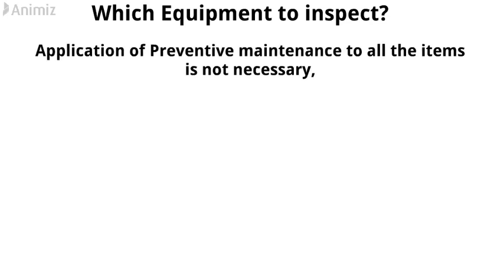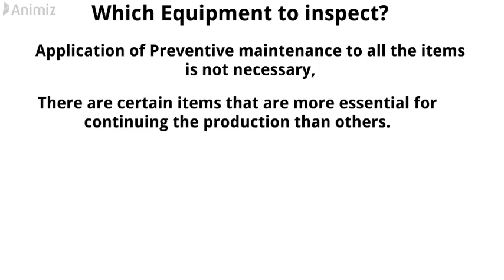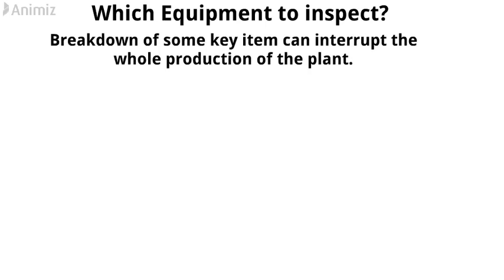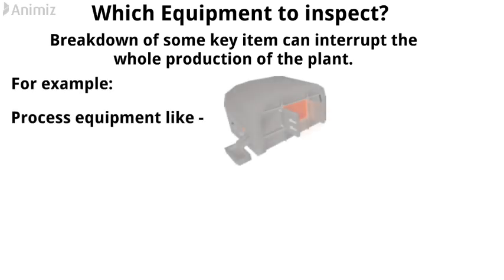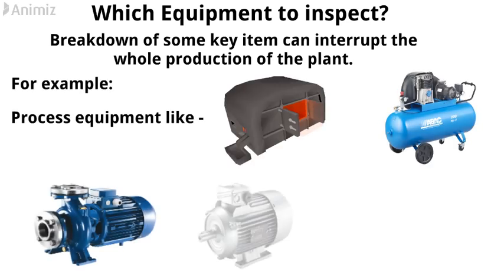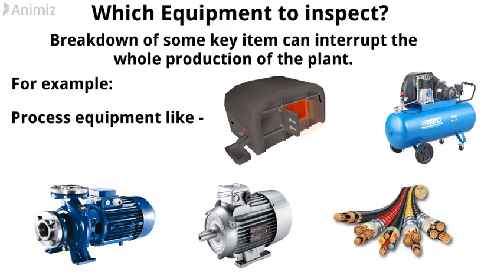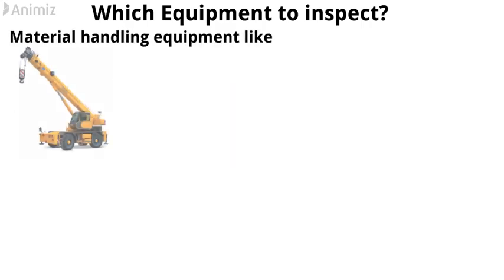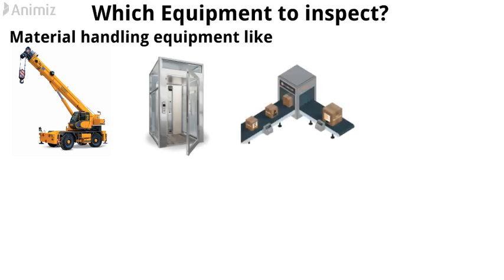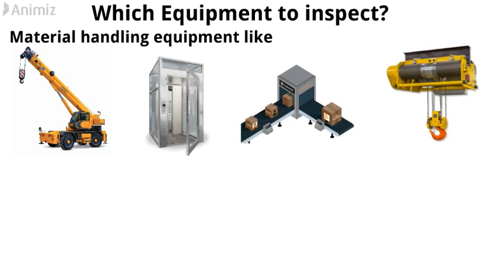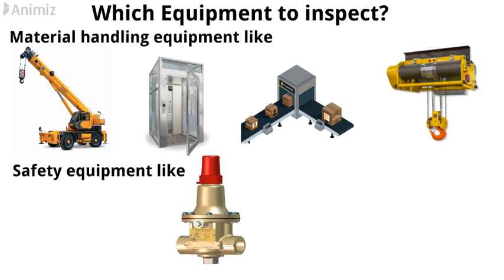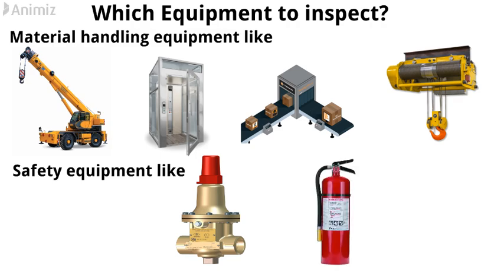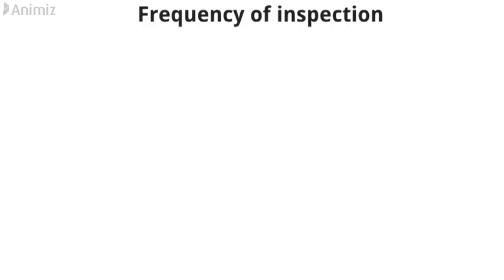Which equipment to inspect? Applying preventive maintenance to all items is not necessary. Certain items are more essential for continuing production than others. Breakdown of a key item can interrupt the whole production of the plant. For example: process equipment like furnaces, compressors, pumps, motors, and electric wiring; material handling equipment like cranes, lifts, conveyors, and hoists; and safety equipment like pressure relief valves and fire extinguishers.